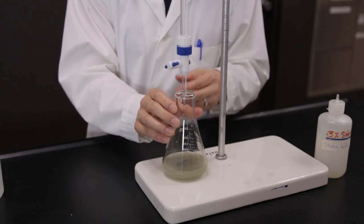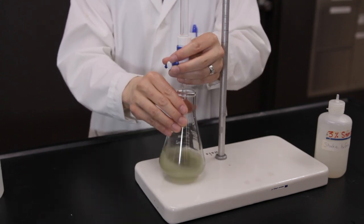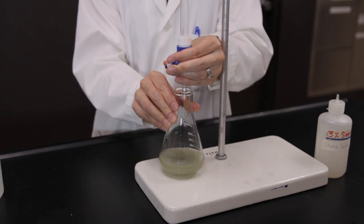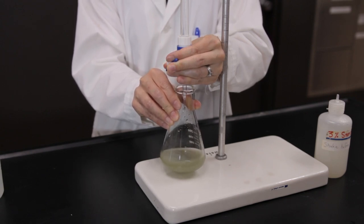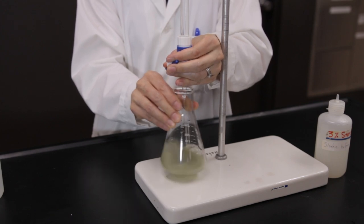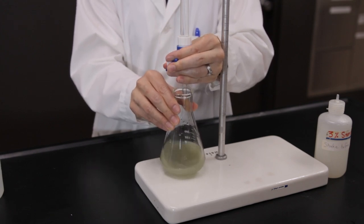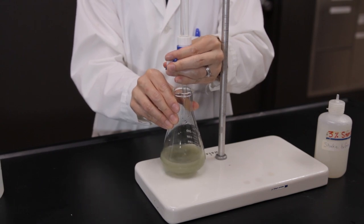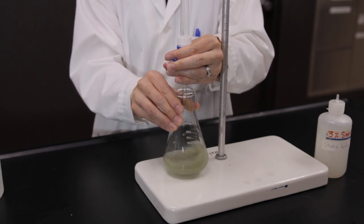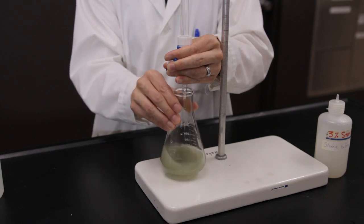Continue the titration by adding more sodium thiosulfate solution dropwise. Add one drop, close the stopcock, swirl the solution, and see if the color disappears. If not, then continue adding the titrant one drop at a time with a break between each addition until the color disappears. You may even have to add a partial drop when you're near the end point.